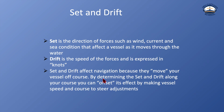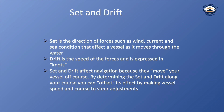So what is set and drift? Set is the direction of forces such as wind, current, and sea condition that affect a vessel as it moves through the water. Drift is the speed of those forces and is expressed in knots. Set and drift affect navigation because they move your vessel off course. By determining the set and drift along your course, you can offset their effect by making vessel speed and course-to-steer adjustments.